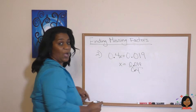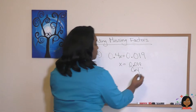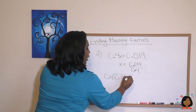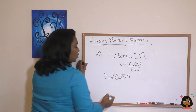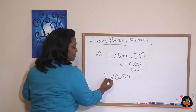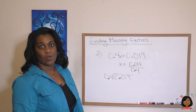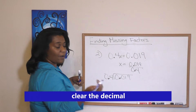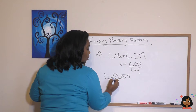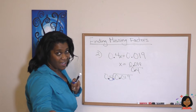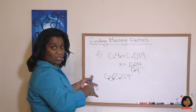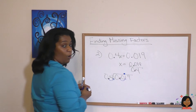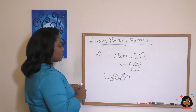We're actually going to divide to find out what that decimal is. So let's do it: 0.4 into 0.019. Whenever we have a decimal in the divisor, we have to clear the decimal by moving it as many places to the right as needed. We only need to move it once, but what you do to one side you have to do to the other, so we move the decimal in the dividend over one space as well.